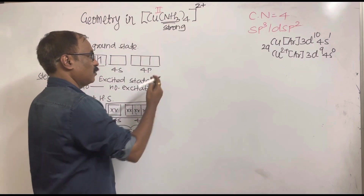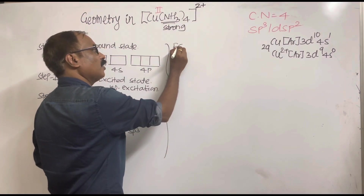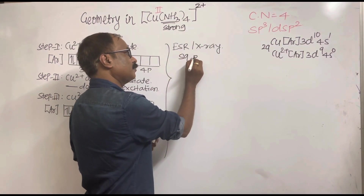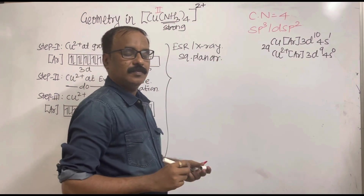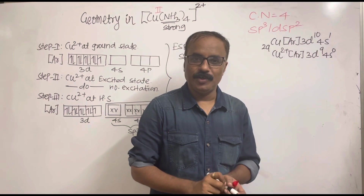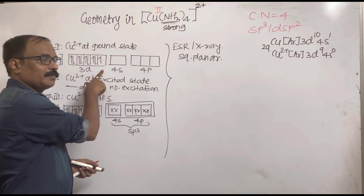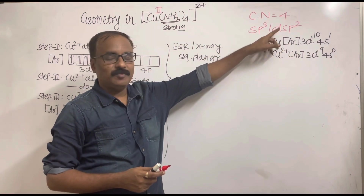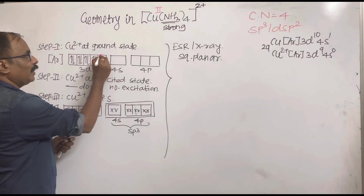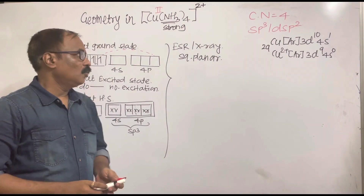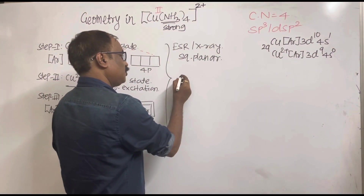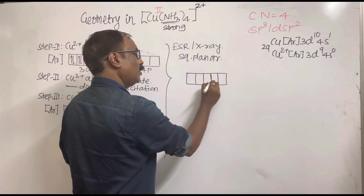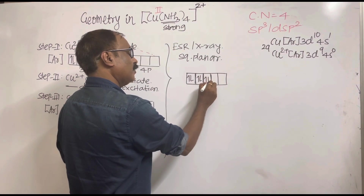But based on ESR and X-ray structure determination, the geometry of this complex is actually square planar. When the geometry is square planar, the hybridization must be dsp². So going back to step one, we use the ground state electronic configuration 3d⁹ to explain dsp² hybridization.